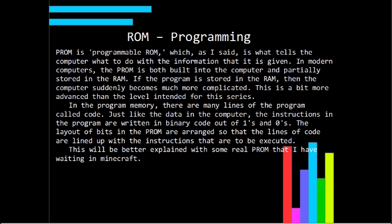PROM is Program ROM, and this tells the computer what to do with the information that it's given. I've actually made a mistake here. I said in modern computers the PROM is both built into the computer and partially stored in the RAM — that's not true. That is a Von Neumann architecture. The architecture that modern computers use is a bit different. The main difference is that you can't store the program in the RAM — it's only in the ROM. This is called a Harvard architecture, and it basically says that there's a different place to store the information — the data — and then there's somewhere to store the instructions. So the instruction and data have different locations where they'll be stored.